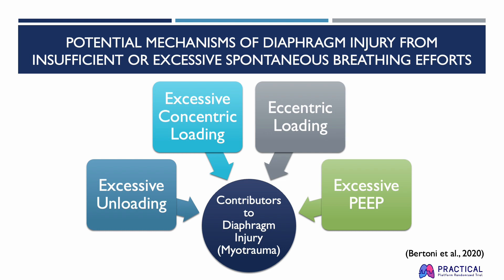The four main potential contributors to myotrauma include excessive unloading, which is when over-assistance from mechanical ventilation and suppression of the respiratory drive through sedation leads to acute disuse atrophy and diaphragm weakness. The effects of diaphragm unloading through controlled and assisted modes of ventilation can be seen during the first 48 hours. Next is excessive concentric loading, when the diaphragm is sensitive to excessive respiratory load. Potential causes include inspiratory patient effort, dyssynchrony, and under-assistance due to insufficient levels of support, leading to vigorous concentric contractions, increased muscular tension, muscle inflammation, proteolysis, myofibrillar damage, and sarcolemma disarray.